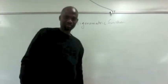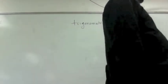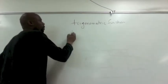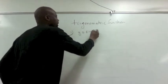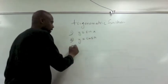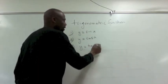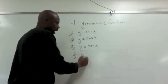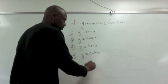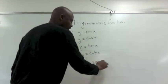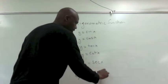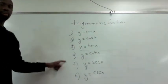We're going to do derivatives of trigonometric functions. There are six of them. Number one is y equals sine of x. Number two is y equals cosine of x. Number three is y equals tangent of x. Number four is y equals cotangent of x. Number five is y equals cosecant of x. And number six is y equals secant of x. These are the six trigonometric functions.